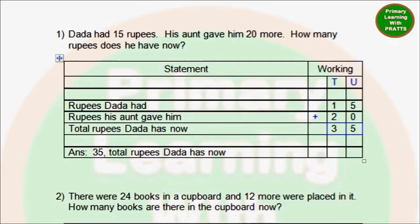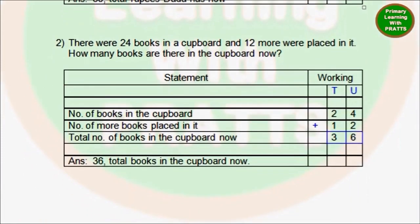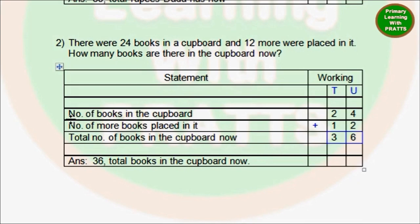Next sum: There were 24 books in a cupboard and 12 more were placed in it. How many books are there in the cupboard now? Again, statement and working. We will begin with our statements. First one: Number of books in the cupboard is 24. Number of books placed in it is 12.